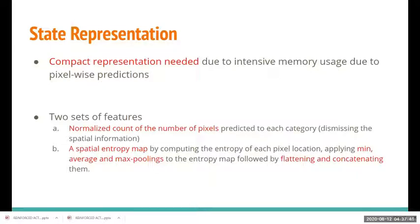For the reinforcement learning formulation, we need representations for states and actions. To better understand how to encode them, we should understand their dependencies. The state is a function of the segmentation network F at a time step T, while an action is also a function of the segmentation network, the labeled dataset, and the unlabeled dataset — which we will understand better when we examine how an action is used in the whole process.